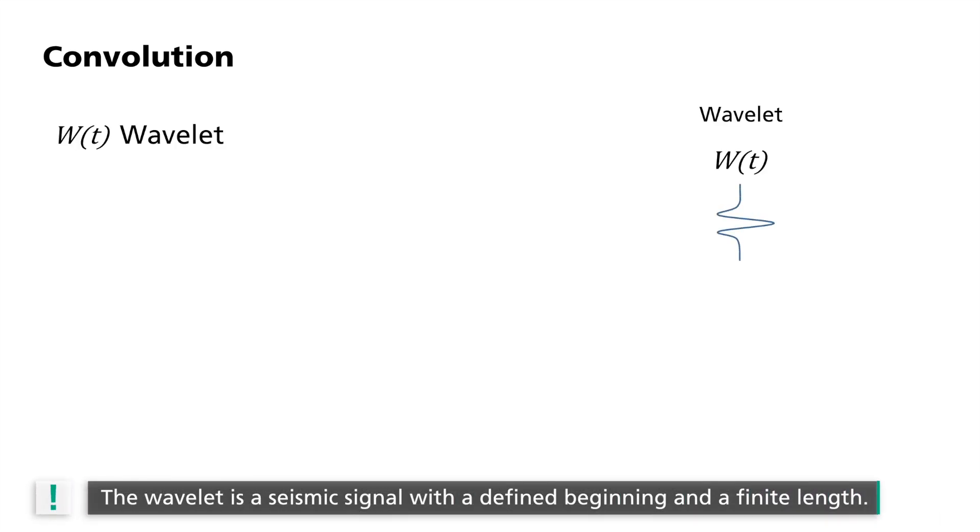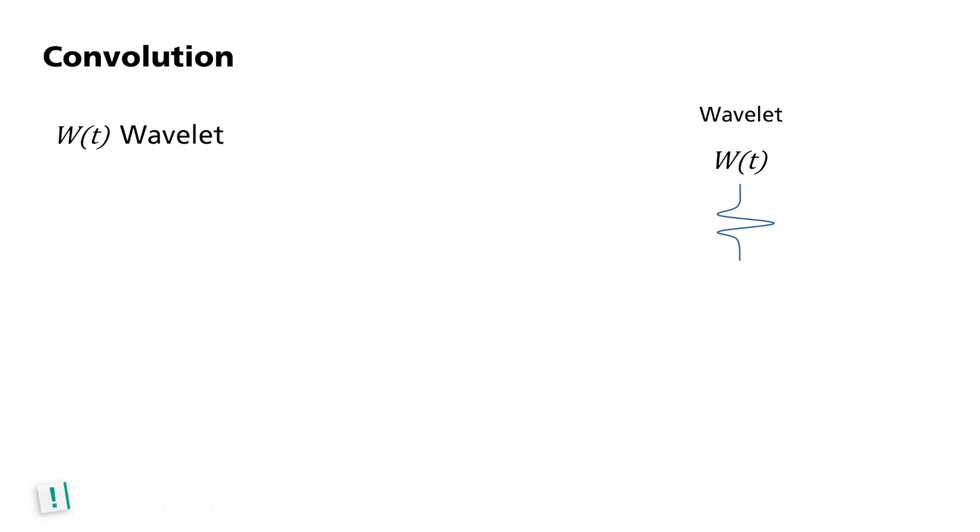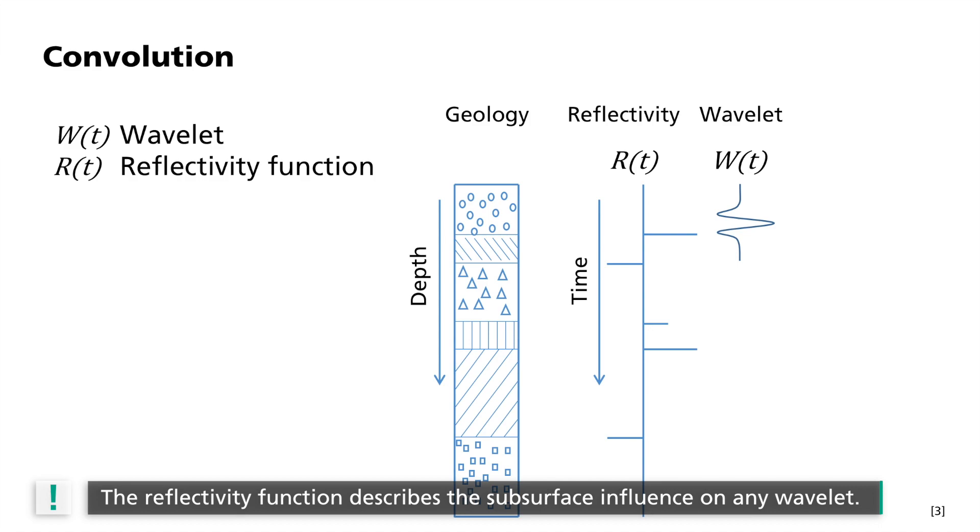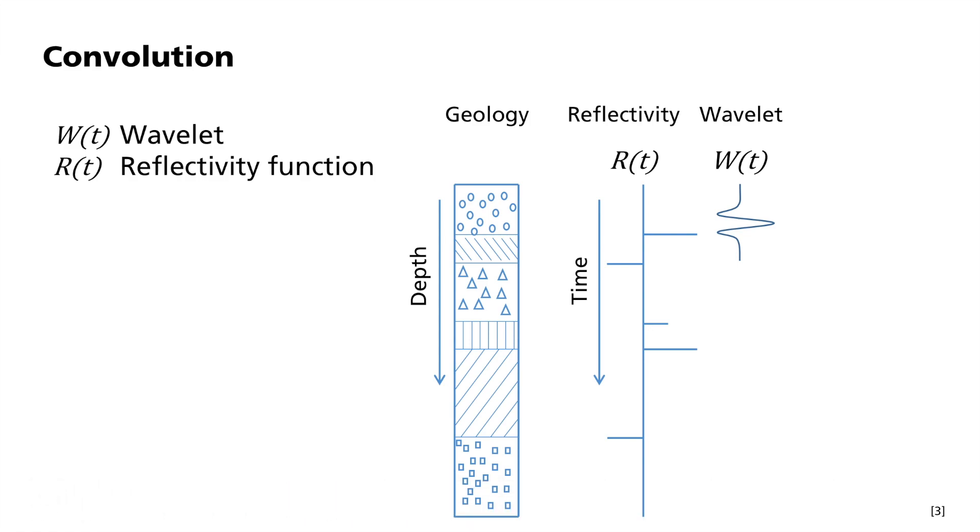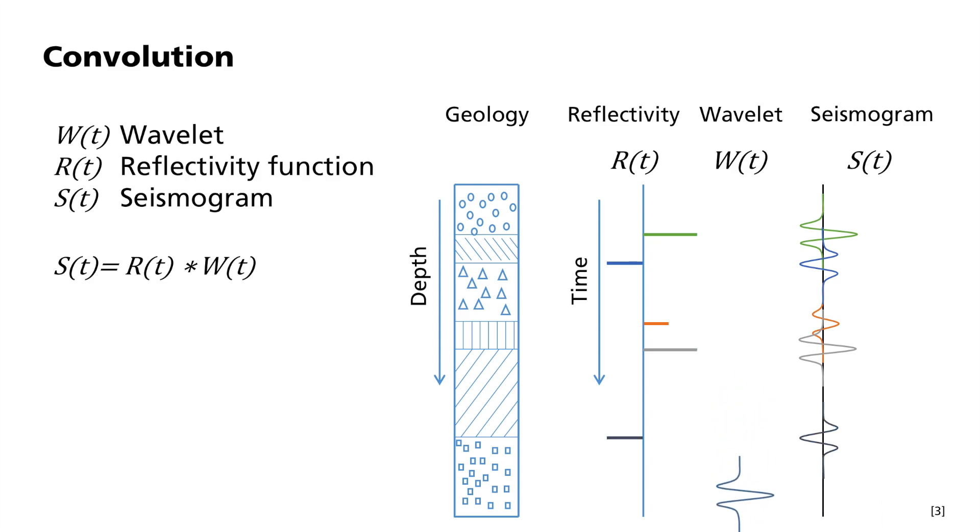This connection between source and structure is described mathematically as convolution. A seismic source radiates an initial wave whose signal is referred to as a wavelet W. The wavelet W is a seismic signal with a defined beginning and a finite length. W is a function of time T. On its journey through the Earth, it encounters reflectors that modify it. The reflectivity function R of T describes the subsurface influence of any particular wavelet. The observed seismic form S of T is now equal to a function of W and R. The star stands for convolution and entails the following operation. The wavelet W is pushed piece by piece over the reflectivity function R and is multiplied with it. The individual results are then added and a seismic form is transformed into a summed trace. The convolution is therefore a type of sliding averaging between the two functions.